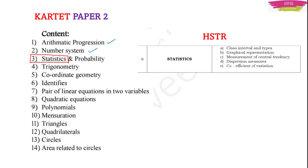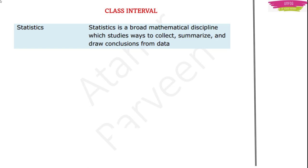So let us start. Statistics means it is a set of equations used to analyze some things — it can be anything. If you want to analyze something and you are making equations to analyze that thing, then you are doing statistics. Coming to mathematics, statistics means it is the way of collecting, summarizing the given data. You can collect, summarize, analyze, organize, or interpret data. The study of doing all this is known as statistics.